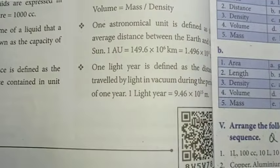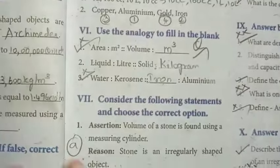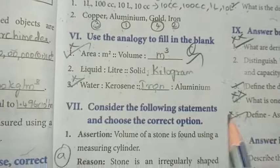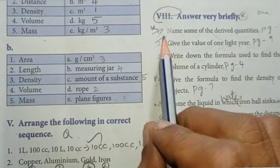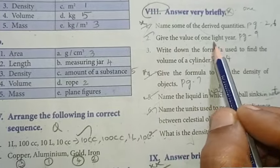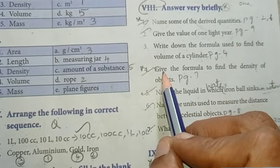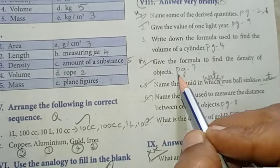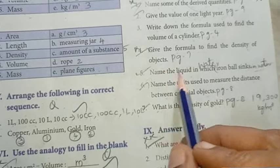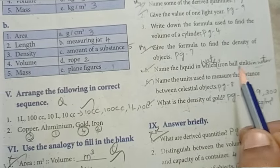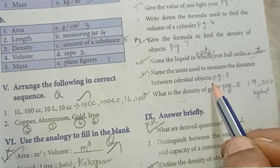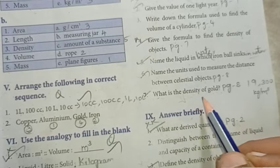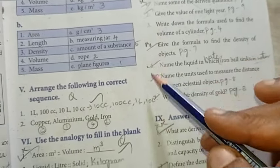Here are the 1-mark questions. You can see the analogy, and the analogy in 2 marks. You can see the answers very briefly. Name some of the derived quantities. Give the value of 1 light year — that's important. Give the formula to find the density of objects. Name the liquid in which an iron ball sinks. Name the unit used to measure the distance between celestial objects. What is the density of gold? Total 7 questions.